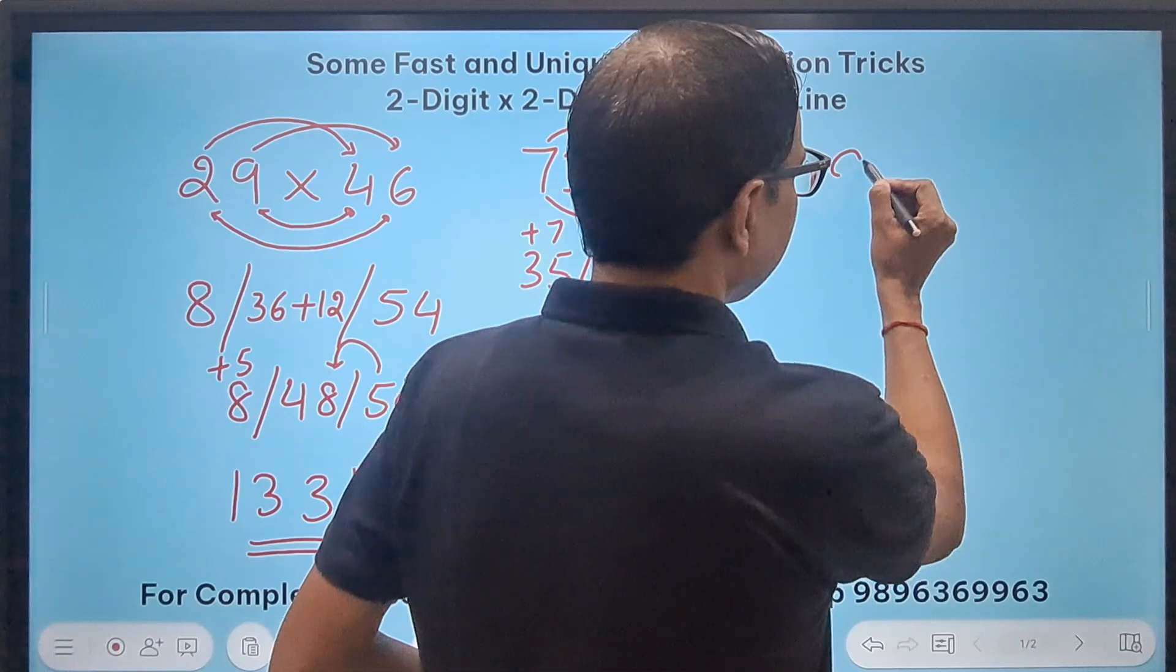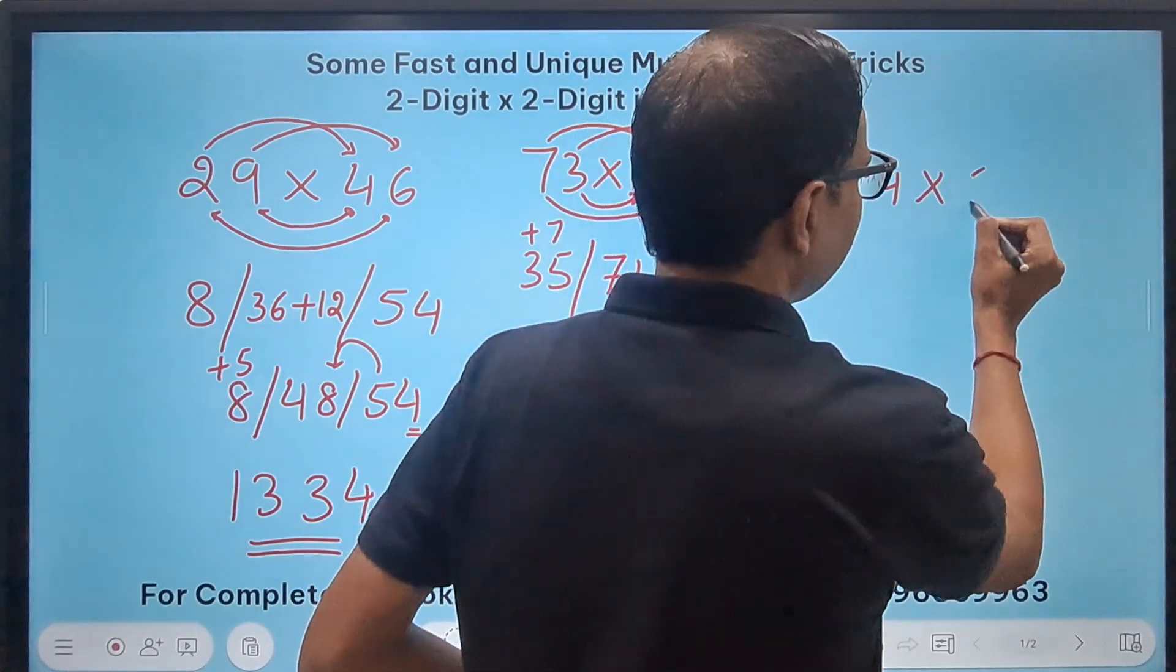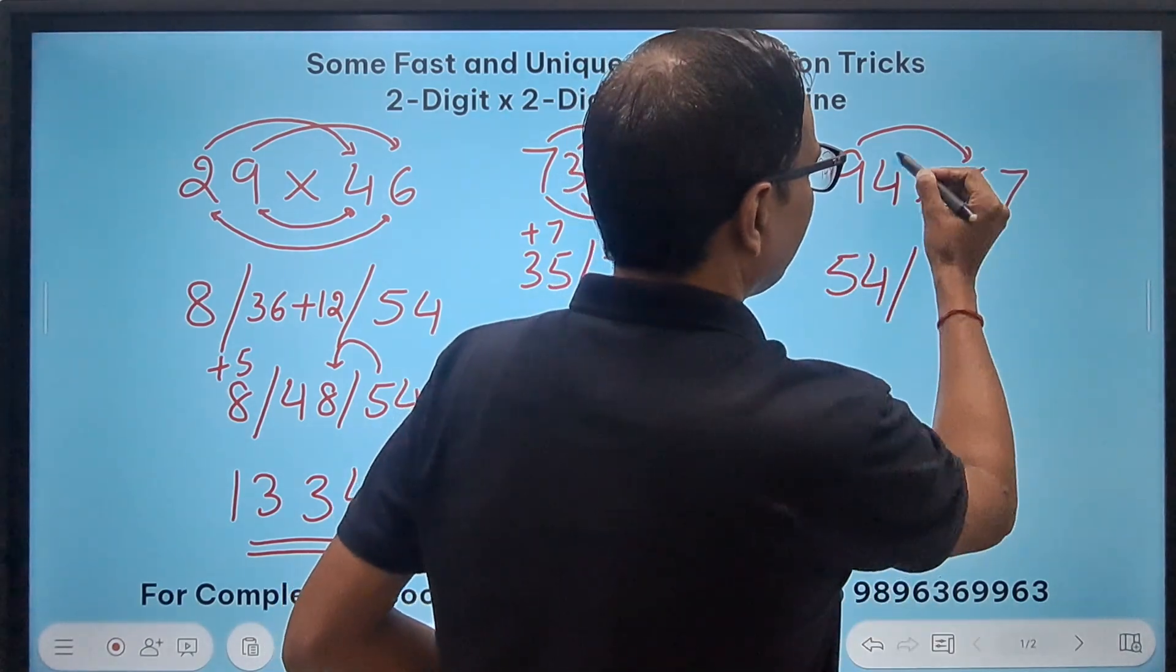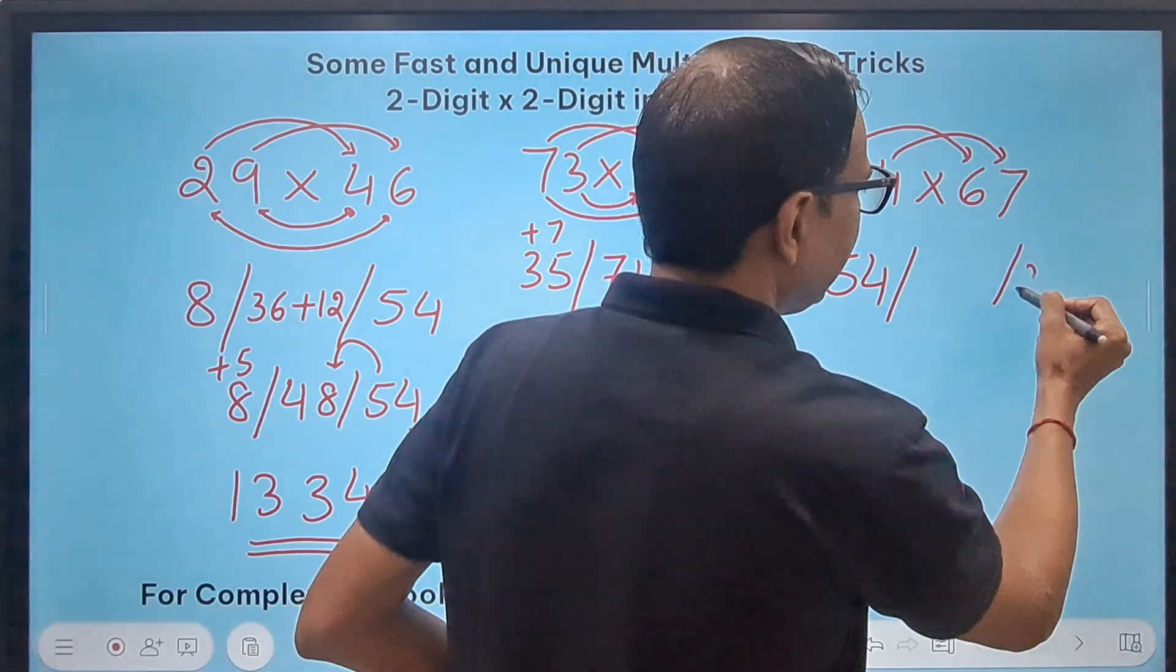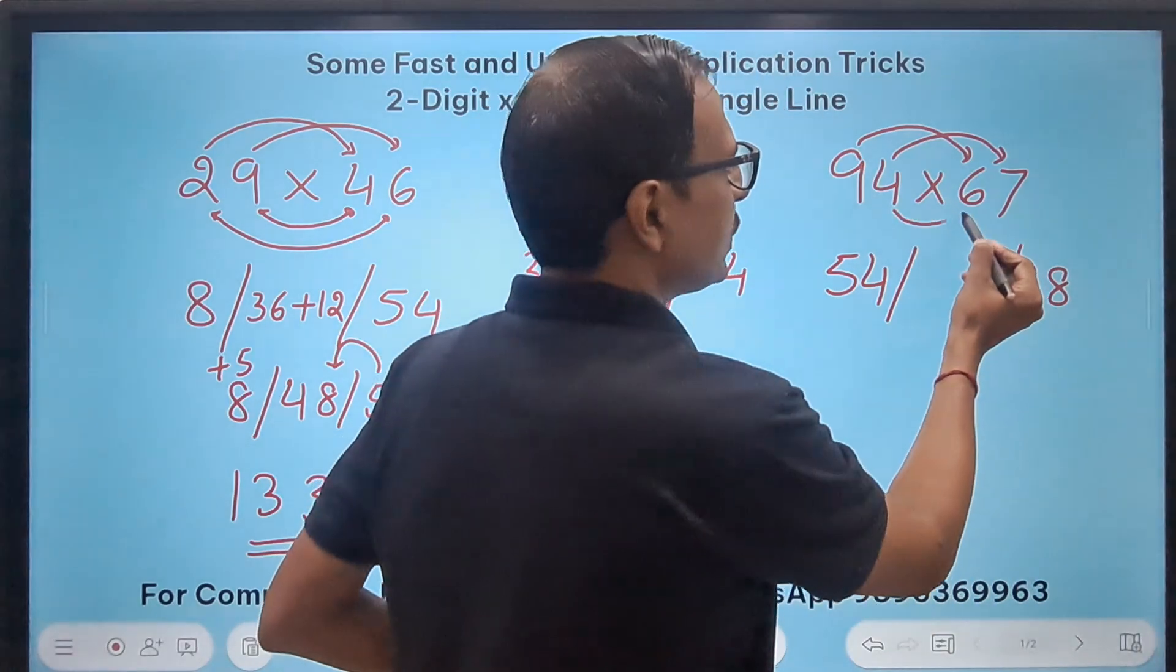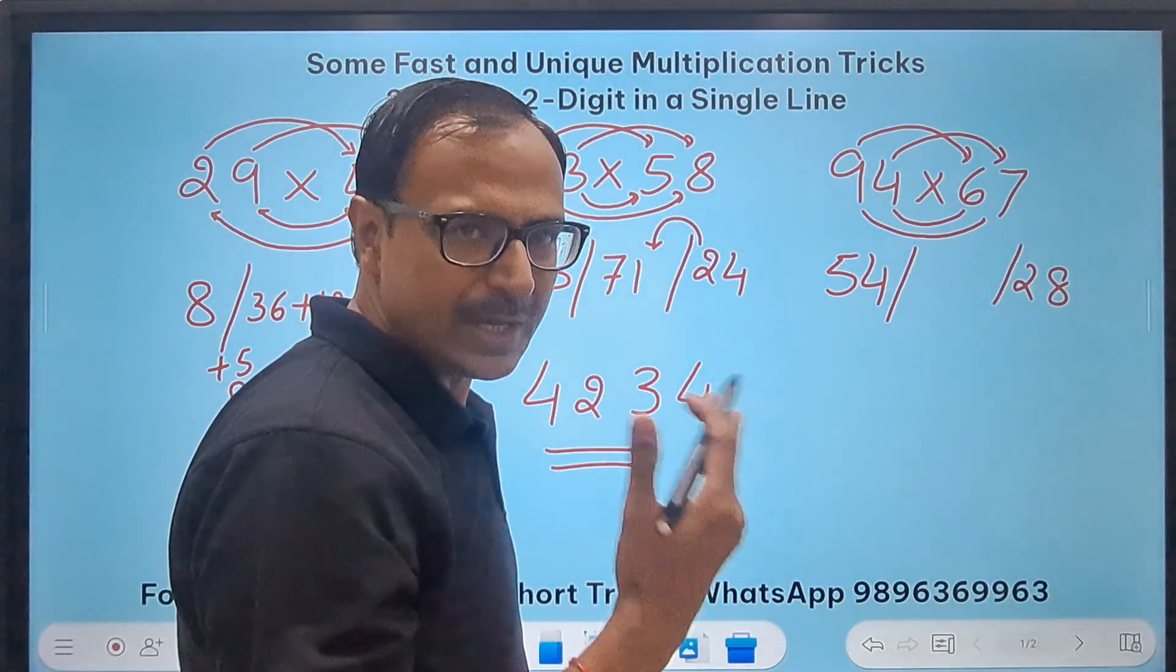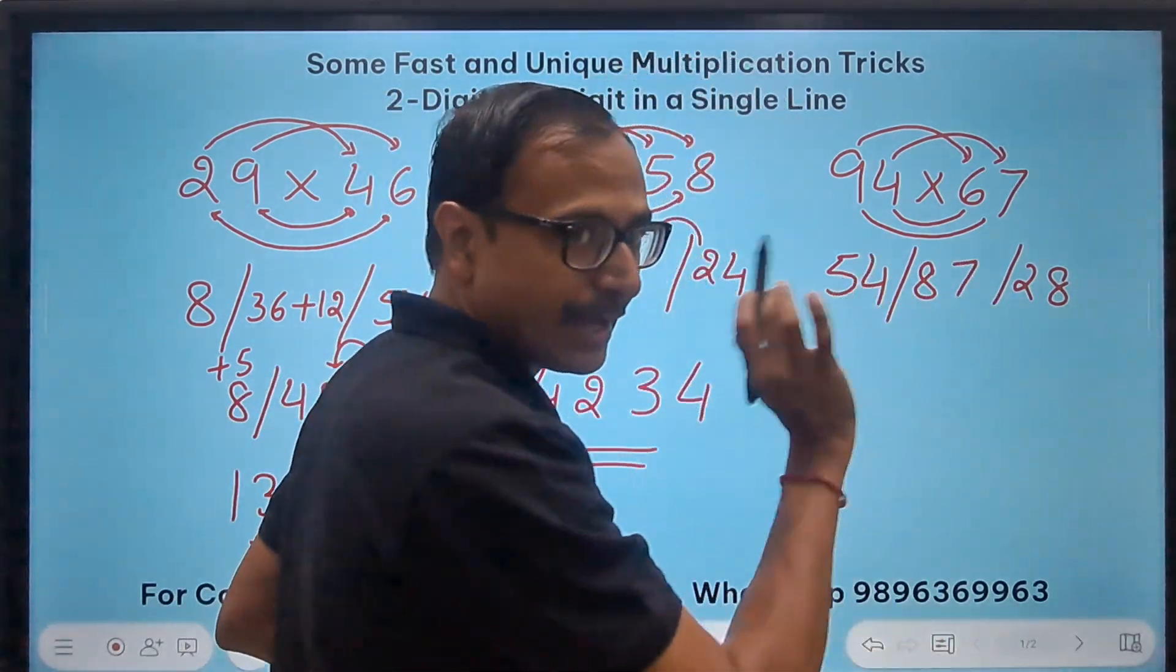Let's take 94 and 67. So 9, 6 are 54 and then 4, 7's are 28 and finally this is 24 and this is 63, 63 and 24, 87. Now that's where you need to be really careful.